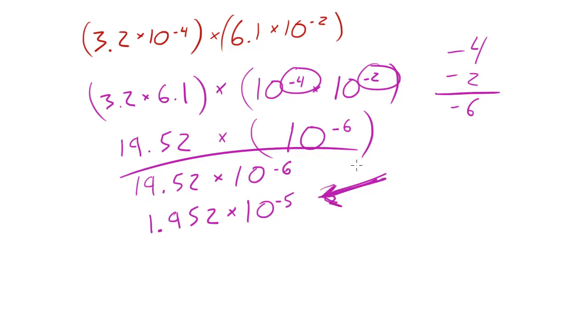So 1.952 times 10 to the negative 5 is our answer that's going to get us all that bonus points. Give me some cookies. That's what you should say to your teacher if you get it right. You know, I probably wouldn't take that advice. But okay, one more example.